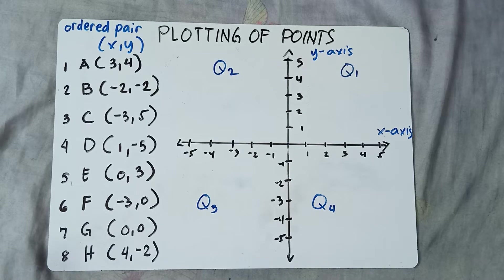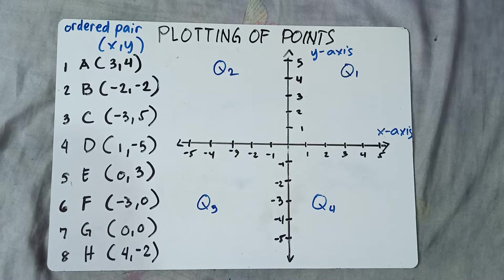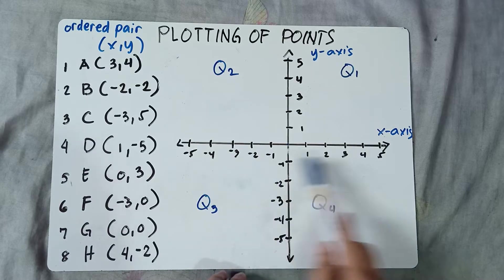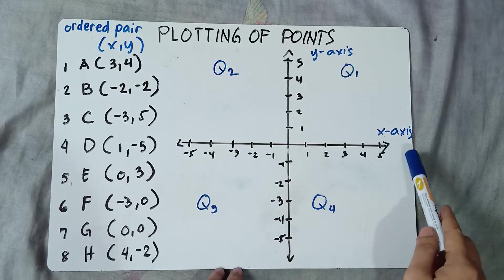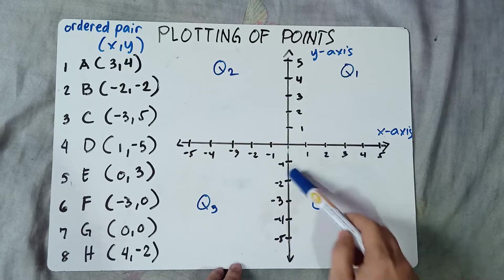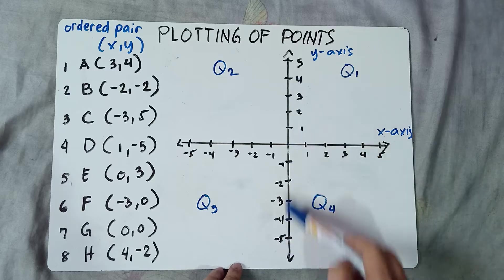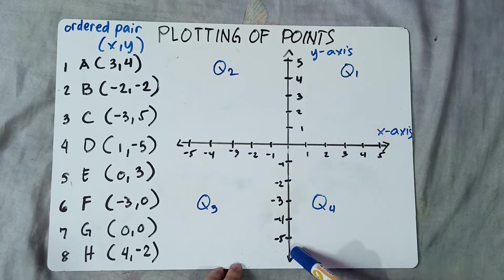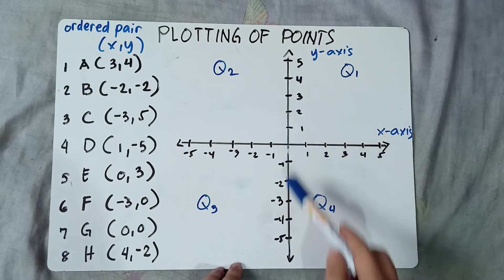Hi guys, good day. This is Teacher MJ and our topic for today is plotting of points in the Cartesian plane. The horizontal line is what we call the x-axis. The vertical line is what we call the y-axis.